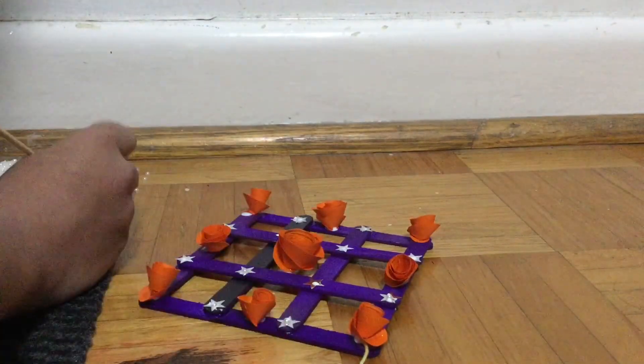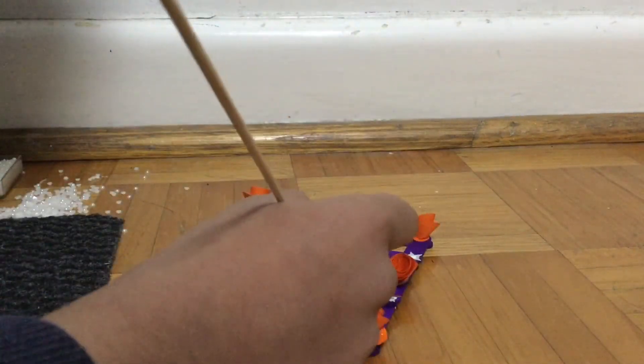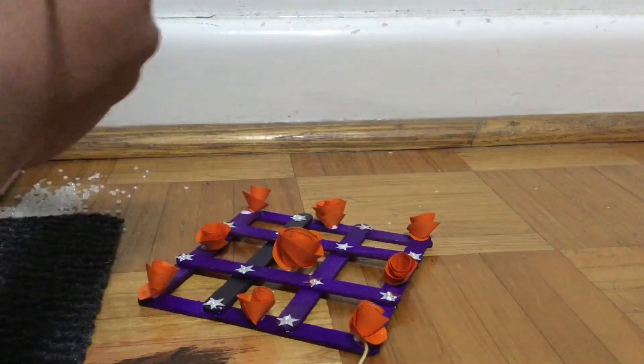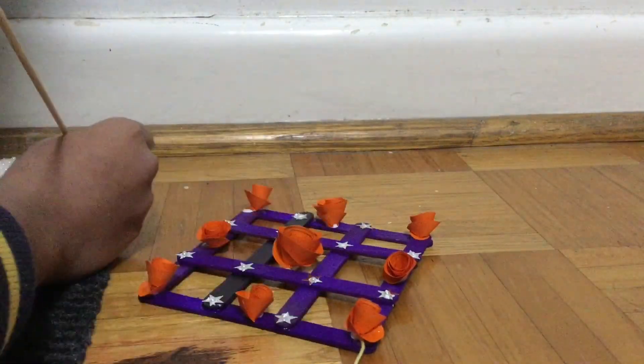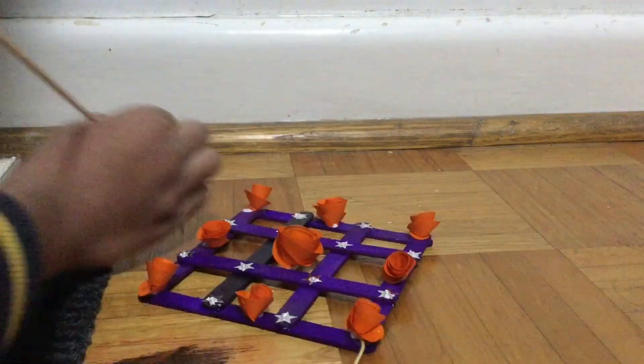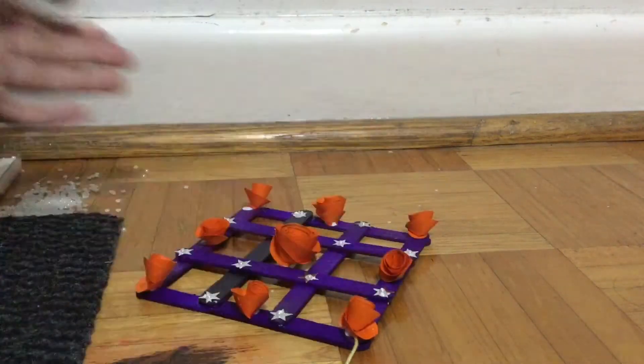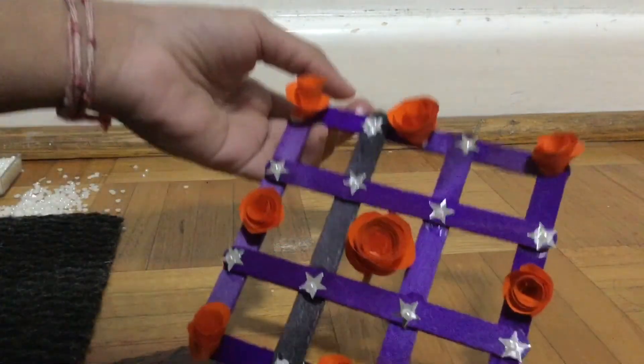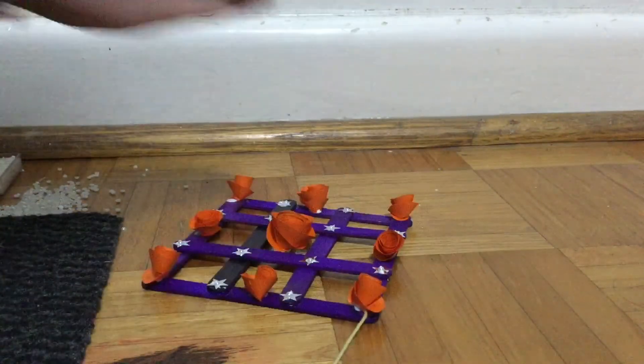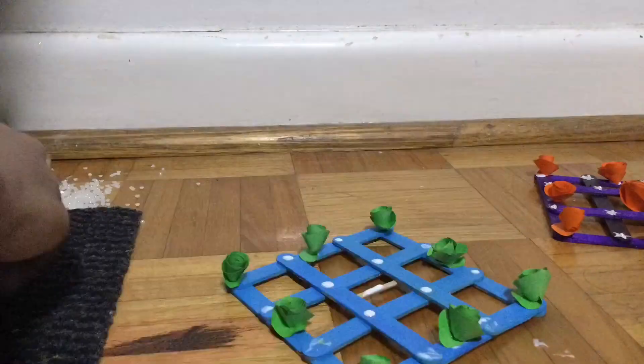And stick them in the middle of the star. Do this same step to the rest of the wall hanging.